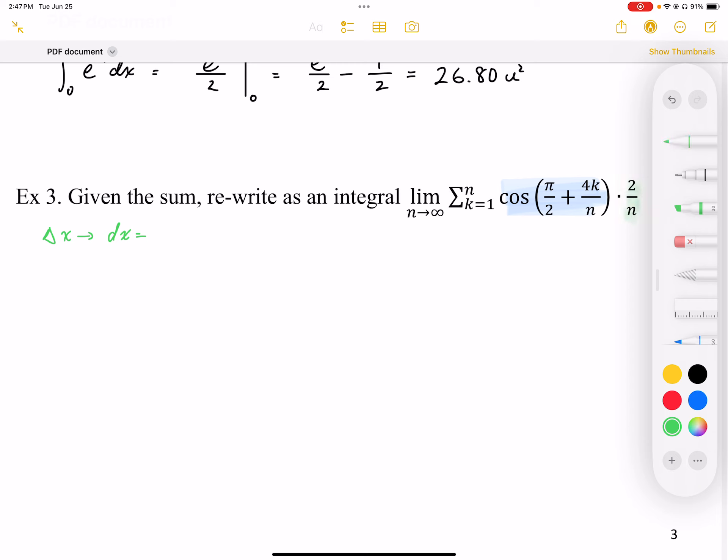So this dx is going to be 2 over n. On the inside of the function, I need to establish my x variable. So on the inside here, this is going to represent my x.